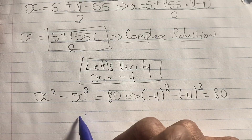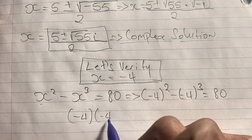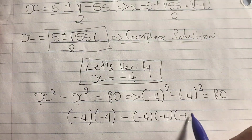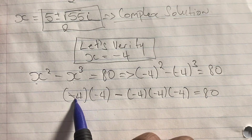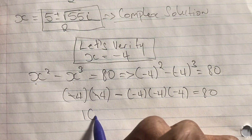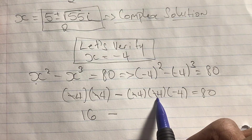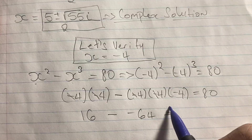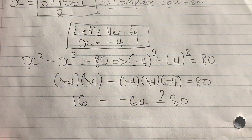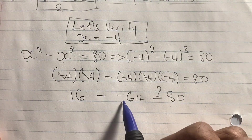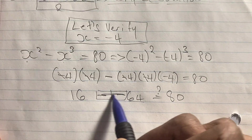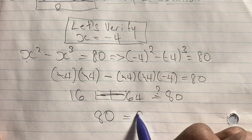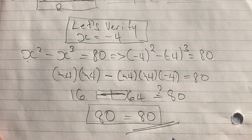Computing: (−4) squared equals (−4) times (−4), which is 16. And (−4) cubed equals (−4) times (−4) times (−4), which equals negative 64. So we have 16 minus (−64). A negative minus a negative becomes a positive, giving us 16 plus 64, which equals 80. Our solution is verified: x = −4 is correct.